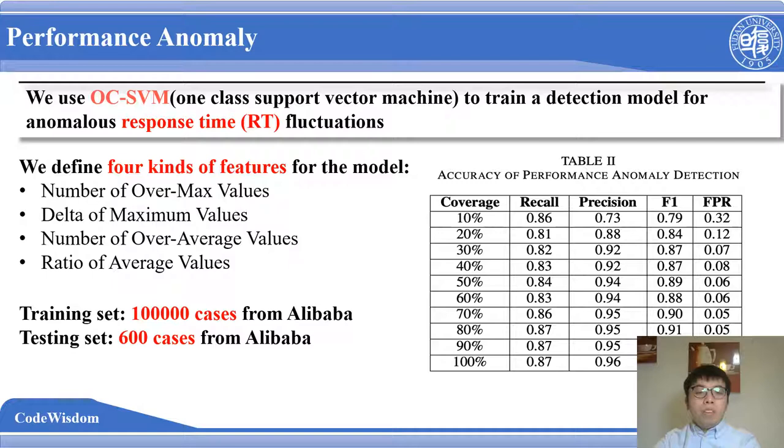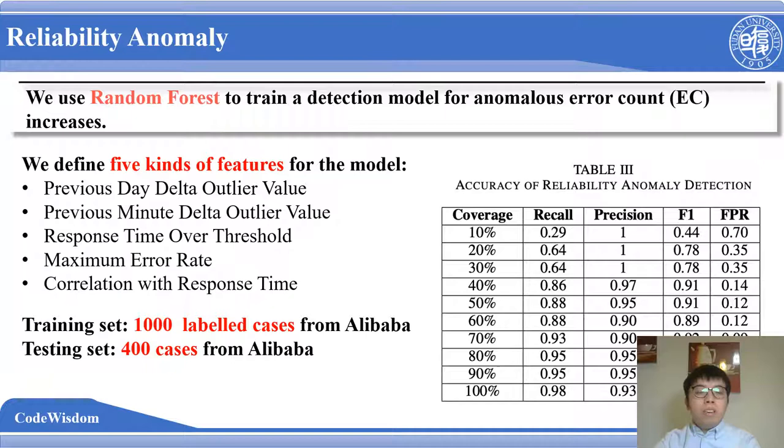The accuracy of the performance anomaly detection is shown in the table. For the reliability anomaly, we use random forest to train a detection model for anomalous error count increases. We also define five kinds of features for the model. For this type of anomaly, we collect 1,000 labeled cases from Alibaba as a training set. We also show the accuracy of the reliability anomaly detection in the table.